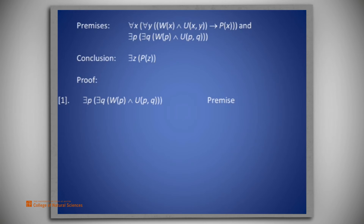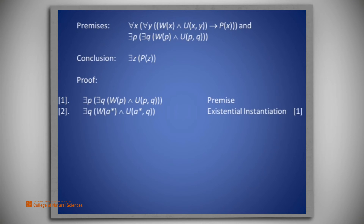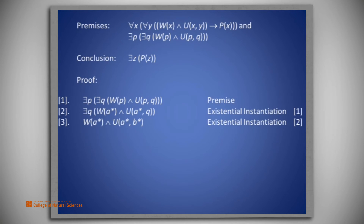On line one we place our second premise: there exists p, there exists q, such that W(p) and U(p,q). On line two we existentially instantiate line one with p being replaced by a*, resulting in: there exists q such that W(a*) and U(a*,q). On line three we existentially instantiate line two with q being replaced by b*, resulting in: W(a*) and U(a*,b*).